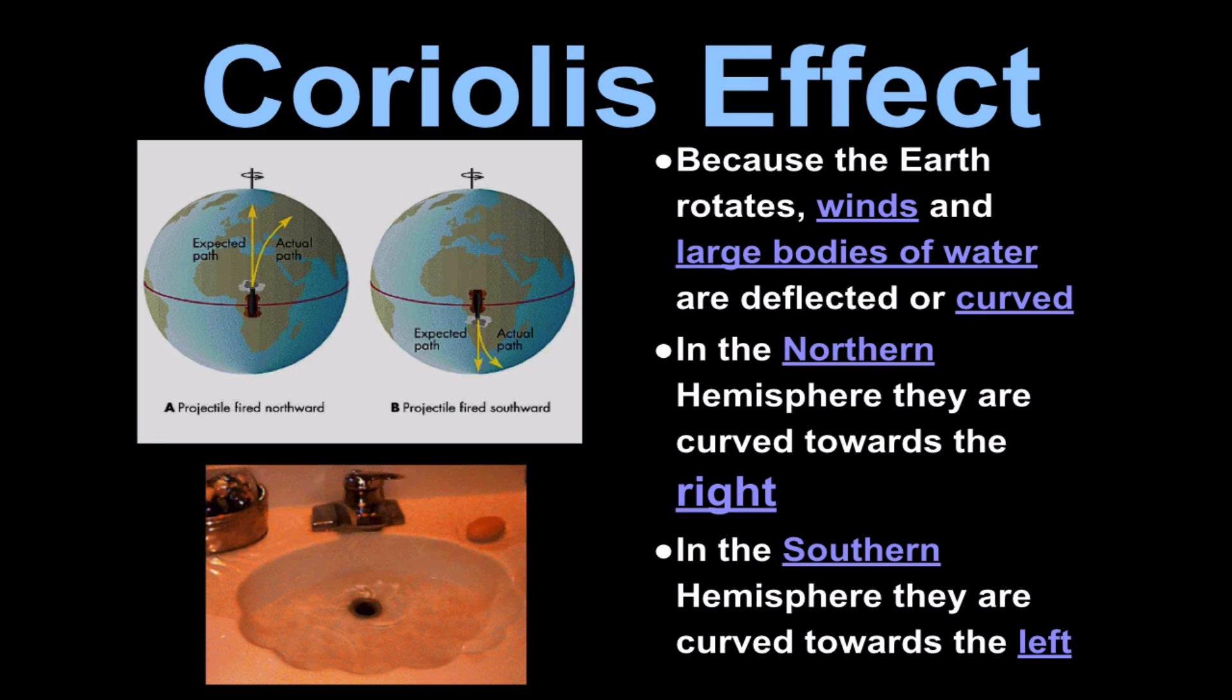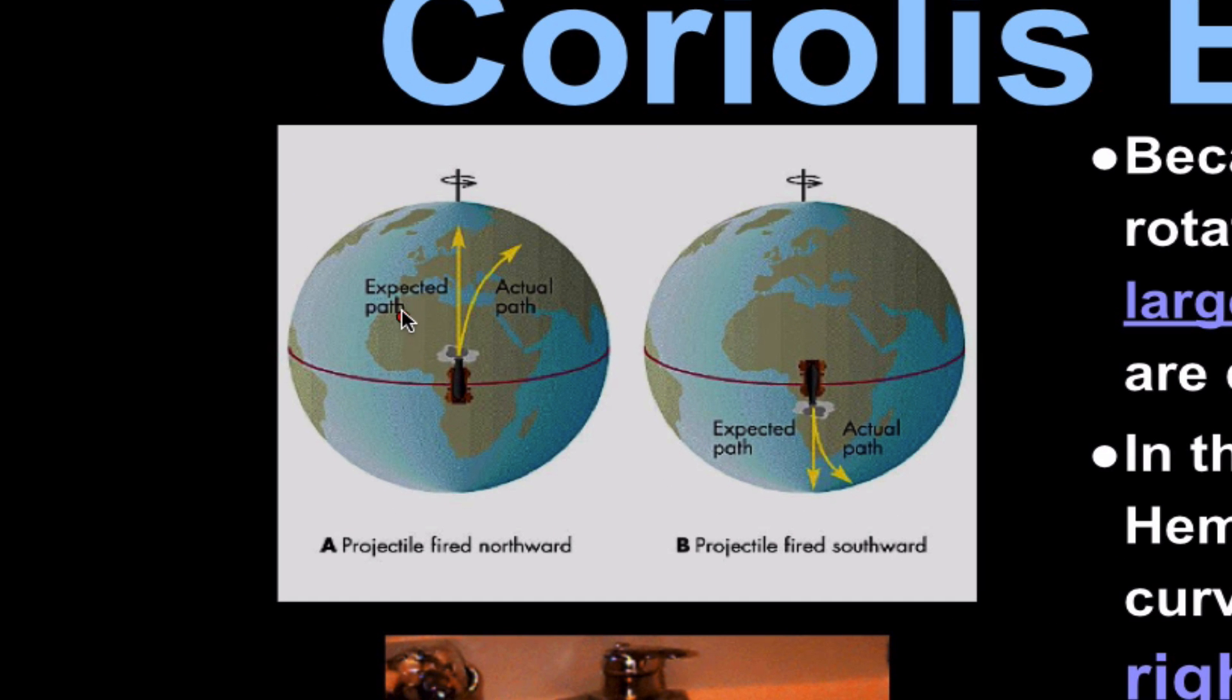The first thing we can take a look at is Coriolis effect. What we notice is that winds and larger bodies of water will often deflect or curve to the right in the northern hemisphere. In the southern hemisphere we see them curving to the left. And if we take a look on this image right here, we have the expected path. So if we shoot a cannonball straight, what will end up happening is we'll get a slight curve to the right in the northern hemisphere. Southern hemisphere, it's a curve to the left from where you're shooting from. So because of this, we have another piece of evidence that Earth actually rotates.